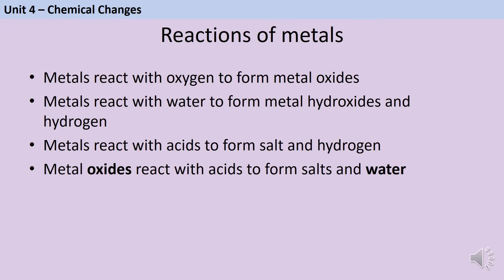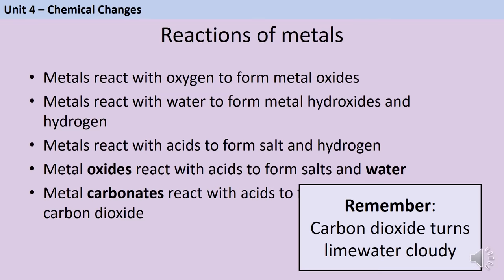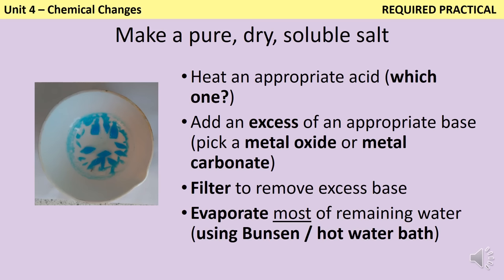Metals react with acids to form a salt and hydrogen; the salt depends on the acid used. Hydrochloric acid makes chlorides (e.g., tin + HCl → tin chloride), sulfuric acid makes sulfates (e.g., lead + H₂SO₄ → lead sulfate), and nitric acid makes nitrates (e.g., zinc + HNO₃ → zinc nitrate). Metal oxides reacting with acid give the same salt but water instead of hydrogen. Metal carbonates reacting with acid give the same salt and water, plus carbon dioxide (test: bubble through limewater, which turns cloudy). To make a pure dry soluble salt, choose the appropriate acid based on the desired salt.